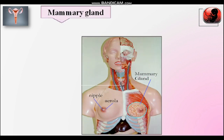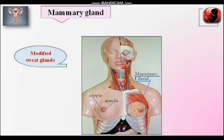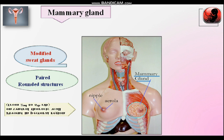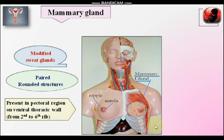Now we come to the point of mammary glands. Class Mammalia — the peculiarity of class Mammalia is the presence of mammary glands in females. What are mammary glands? These are accessory glands and they are modified sweat glands. We know that in the skin there are sweat glands which secrete sweat — mammary glands are modified sweat glands. These are paired rounded structures present in the chest region, or thorax region, also called the pectoral region.